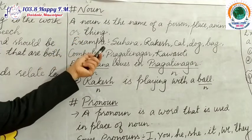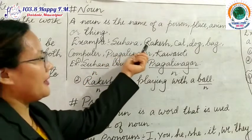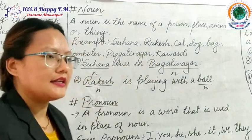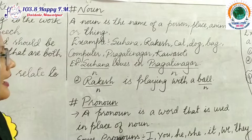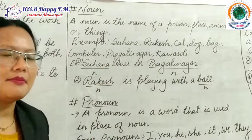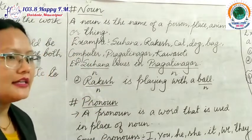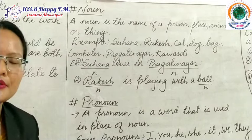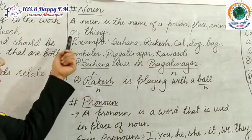Let's go to some examples. Name of a person: it may be Suhana, Ram, Hari, or Rakesh. Name of a place: it may be Pragati Nagar, Kathmandu, or Hospital. Name of an animal: it may be cat, dog, buffalo, etc. Name of a thing: it may be computer, ball, bat, whiteboard, or marker. So dear students, noun is the naming word of a person, place, animal, or thing.